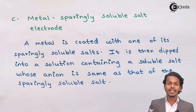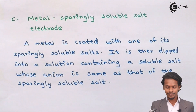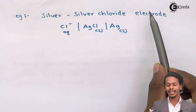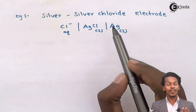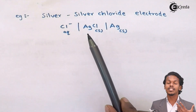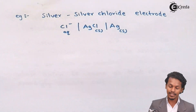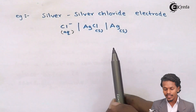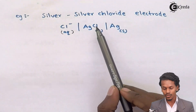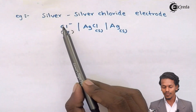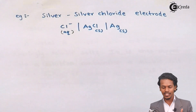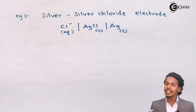An example of a metal-sparingly soluble salt electrode is the silver-silver chloride electrode. Here, silver is the electrode, which is covered with a paste of AgCl. AgCl is a substance that is sparingly soluble in a Cl⁻ aqueous solution. The AgCl paste on the silver electrode is dipped into a solution containing Cl⁻ ions.